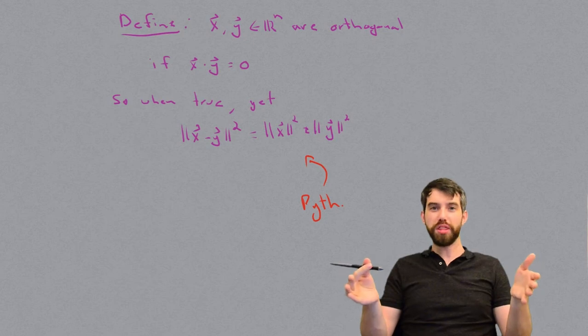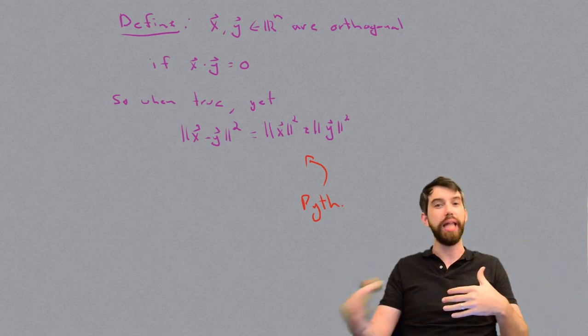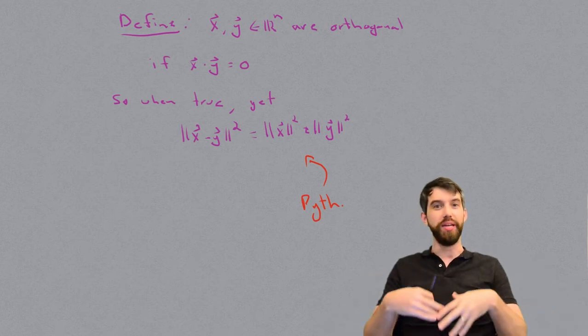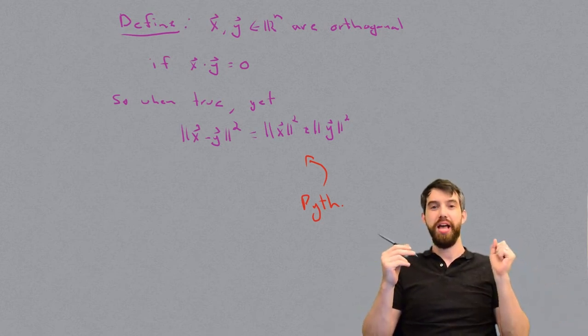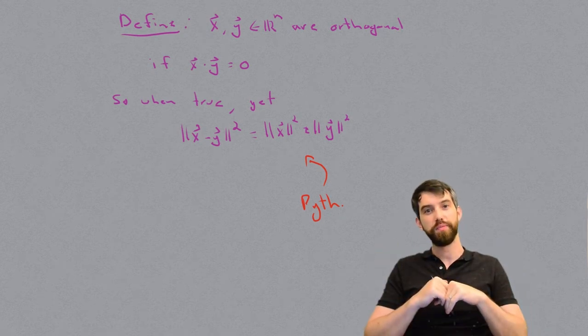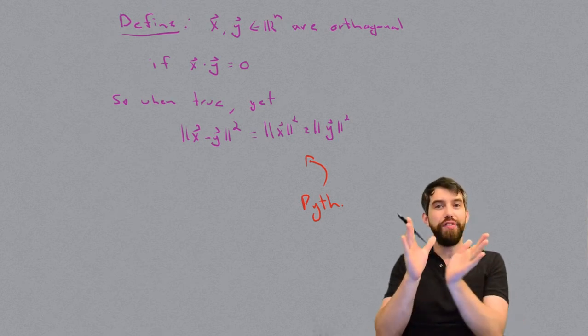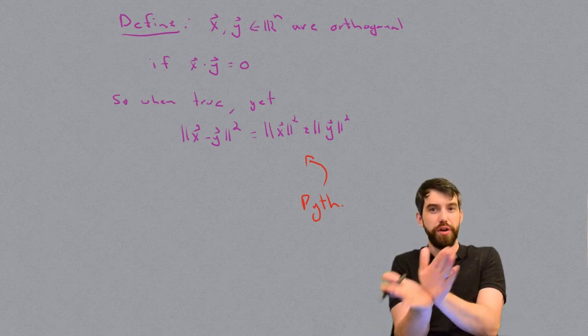So this dot product that we've defined has been very useful for us in connecting into length. We've got a definition of length. We can see when it would obey a Pythagorean theorem. We're going to have a new notion of orthogonality. That's when this dot product is going to be zero. But I also want to connect it to the notion of the angle between two different vectors.